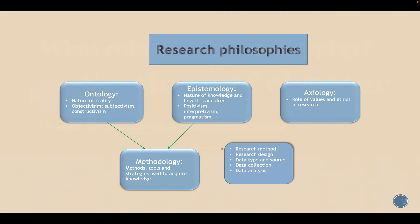The second branch of research philosophy is epistemology, which deals with the nature of knowledge and how that knowledge is acquired. Under epistemology we also have three categories: positivism, interpretivism, and pragmatism.